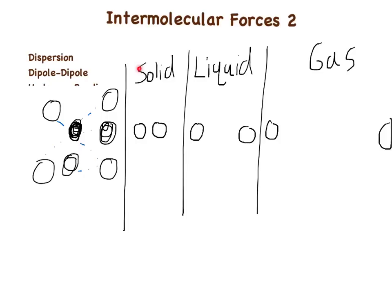So if we go from a solid — say solid carbon dioxide, also known as dry ice — the molecules would be this close together. And then if it melted, it would spread further apart. The point is, to go from a solid, the distance is pretty close. Moving to a liquid, the molecules move further apart from each other. And then to go from a liquid to a gas, they move even further from each other.